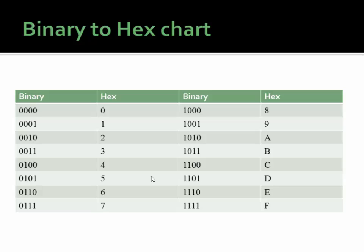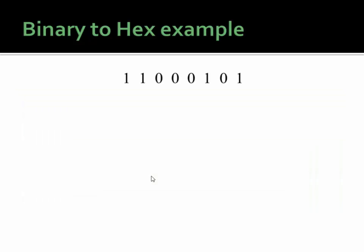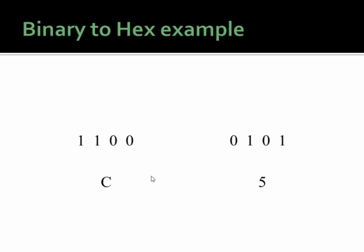Here's the chart of binary to hex. There are sixteen different combinations, and for every four bits of binary information, for every combination of zeros and ones, there's exactly one hex digit that represents it. So if we had the binary number 110000101, and we wanted to turn that into a hex number, all we have to do is break it into two parts of four digits — which is C and 5 — and then combine them together and add the 0x to let us know that it's hex.